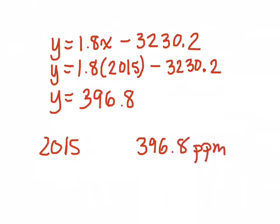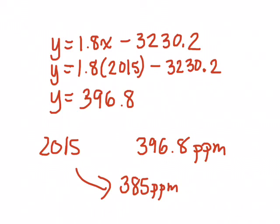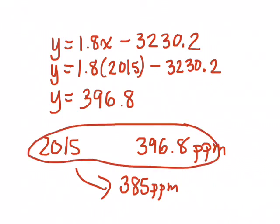What did they predict would happen in 2015? It would be 385. So does the line of best fit verify this or does it reject it? It rejects it — it's higher than what they predicted, just like Alex had said earlier. According to the trend from the graph, it was probably going to be a lot higher than 385.